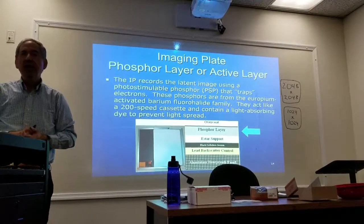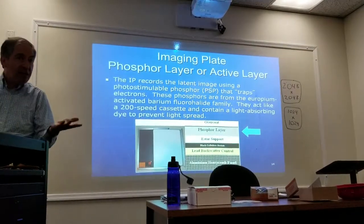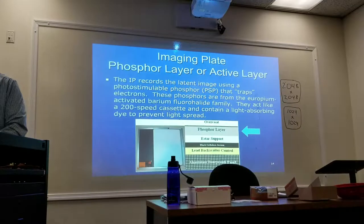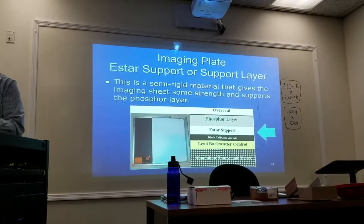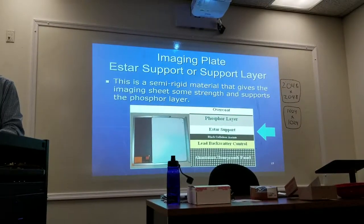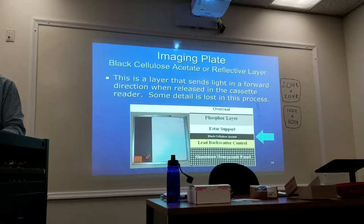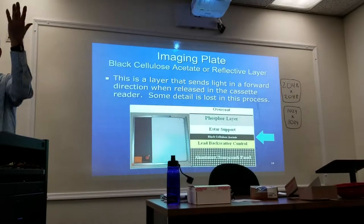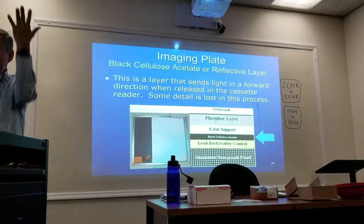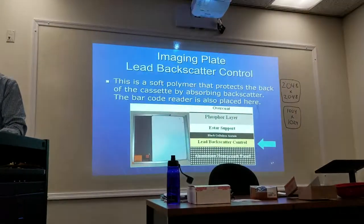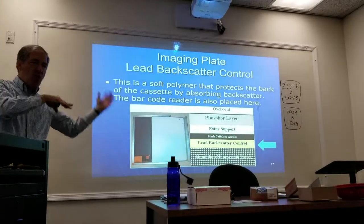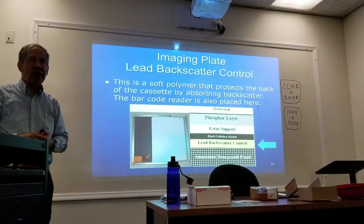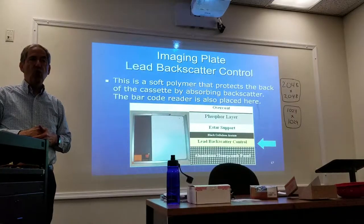The phosphors are made from what they call the europium-activated barium fluoride family. Europium as an activator is responsible for the ability to store energy — it causes the luminescence. It acts as a 200-speed cassette, which is a little slower but gives better detail. It also prevents light spread, keeping it confined. Then you have your support layer that gives support to the phosphor layer, and a black cellulose acetate layer that sends all the signals in a forward direction.